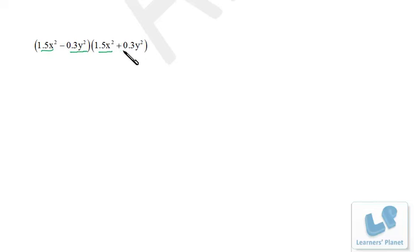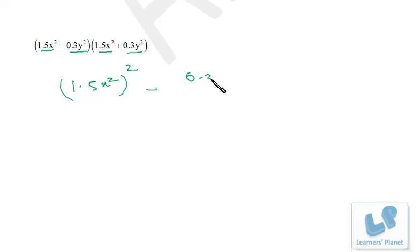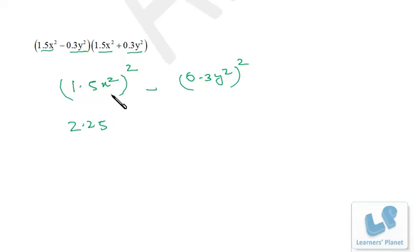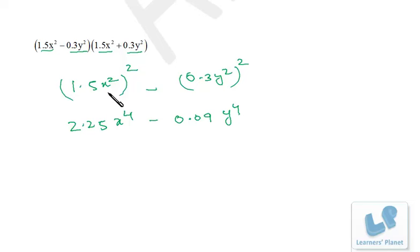For (1.5x² - 0.3y²)(1.5x² + 0.3y²), it is (a-b)(a+b) = a² - b² format. Squaring each term: (1.5)² = 2.25, so 2.25x⁴, minus (0.3)² = 0.09, giving 0.09y⁴. So the result is 2.25x⁴ - 0.09y⁴. Do not forget to put the data in brackets.